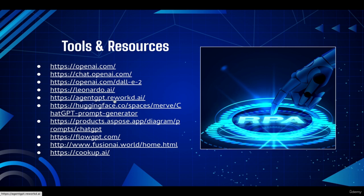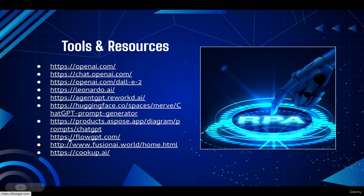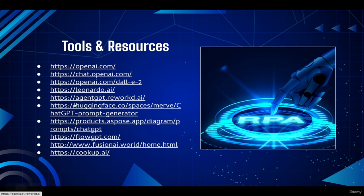We also have Agent GPT, which is our autonomous AI agent. We have HuggingFace, Aspos, FlowGPT, VersionAI, and CookupAI — all of these are AI prompt generators. Let's talk about the first one, OpenAI.